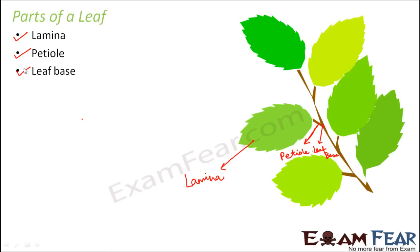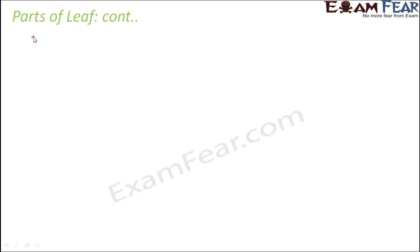We will talk about the function of each of these parts. When I talk about lamina, sometimes lamina is also known as leaf blade. In many books you will see that leaf blade and lamina are used interchangeably. Let us now talk about the different parts of a leaf in a little more detail — lamina, petiole, and leaf base.